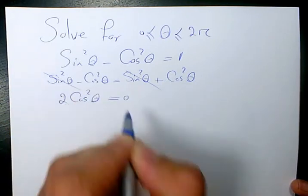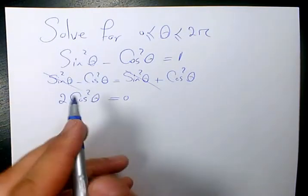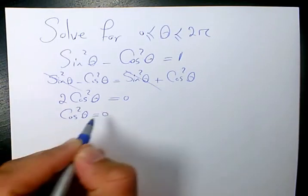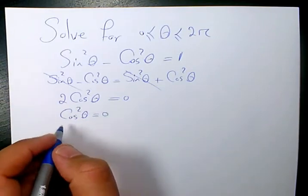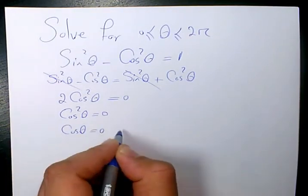Now, 2cos²θ = 0 means that cos²θ = 0. Then we can find the square root of both sides, so cosθ = 0.